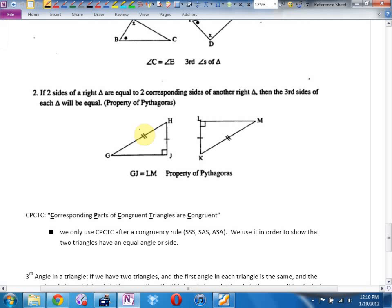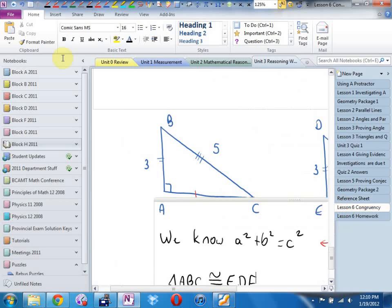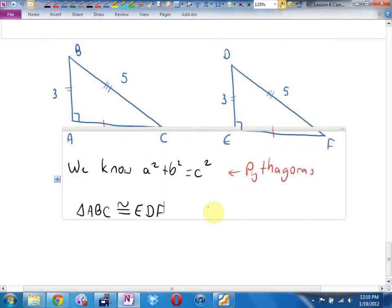But because it's a right angle and you know that Pythagoras works, you can say, oh, I do know that third side has to be the same. In fact, on your yellow reference sheet, I'm pretty sure on that back page, so here was our three congruency rules. And then right next to it, on the right-hand side, property number two, if two sides of a right triangle are equal to two corresponding sides of another right triangle, then the third side has to be equal property of Pythagoras, and you've got side, side, side in disguise. Did I include the reason?